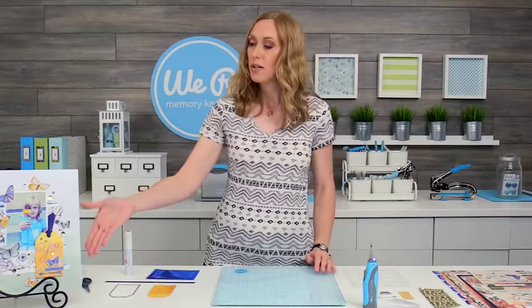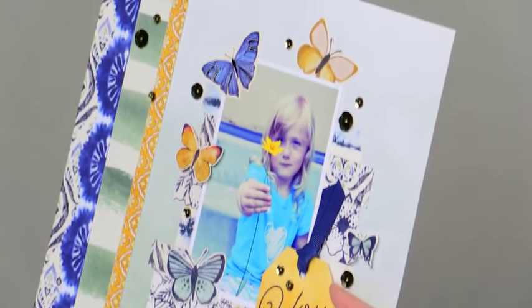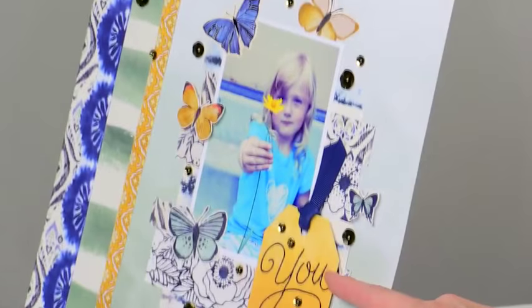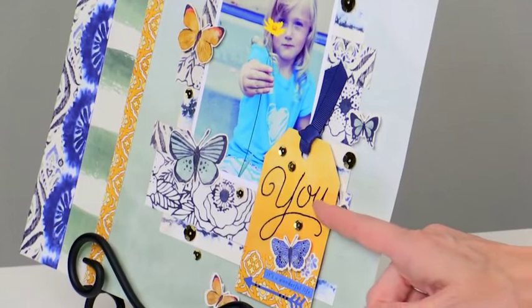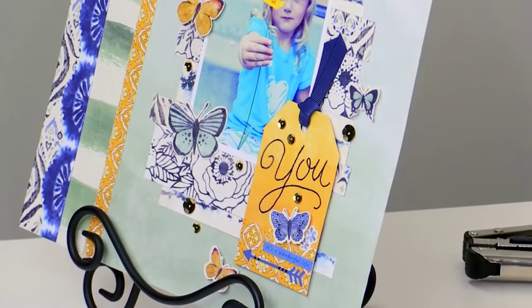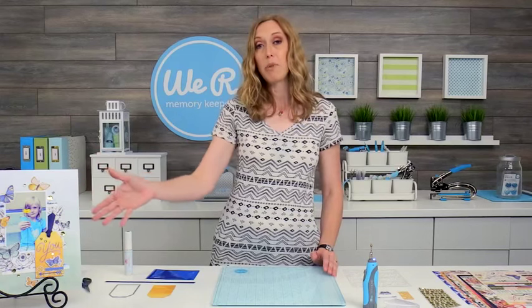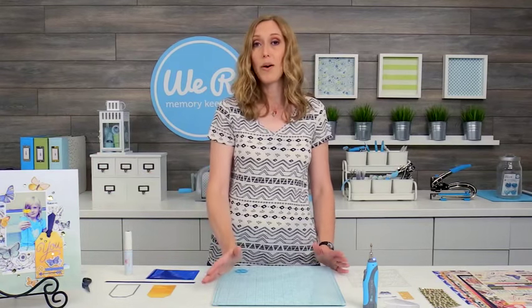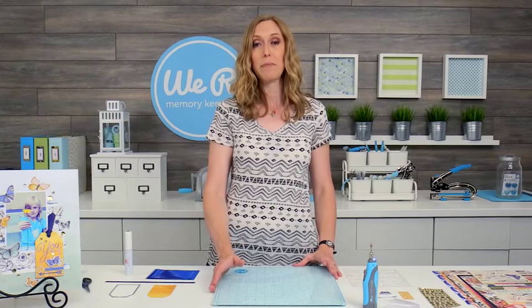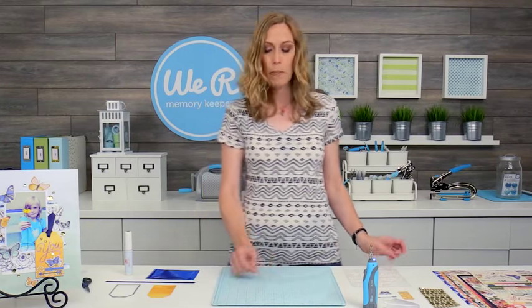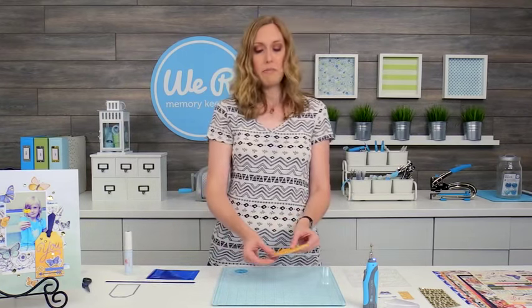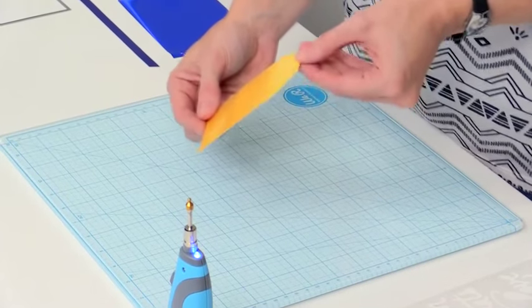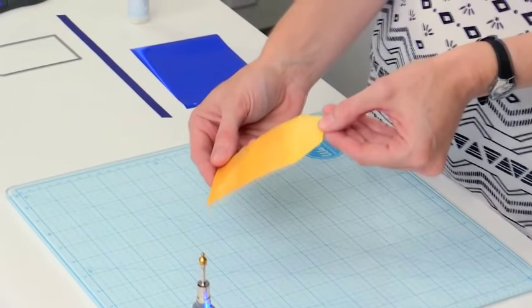So today I'm going to show you a scrapbook page that I created using the Heat Wave Pen. I created a little tag right here with my title using the Heat Wave Pen and a template. I'm going to show you how to make this tag and I added it to a scrapbook page but you could add the tag to a card or tie it onto a gift wrapping, however you'd like to use it. I've already started by cutting out a tag using our nesting tag dies and this is the second smallest die.